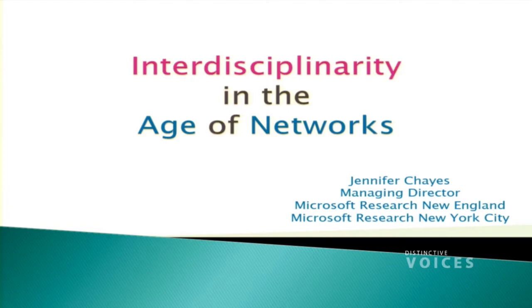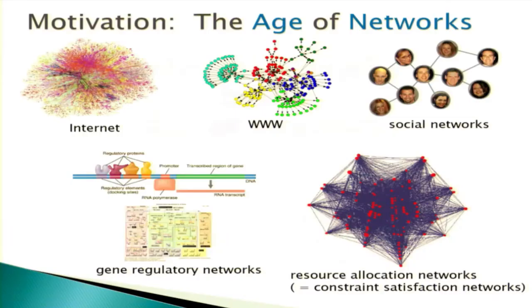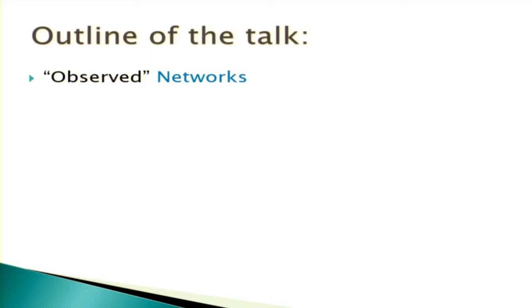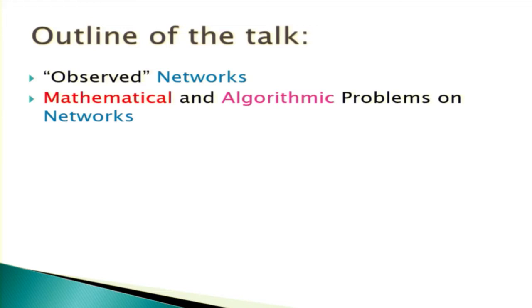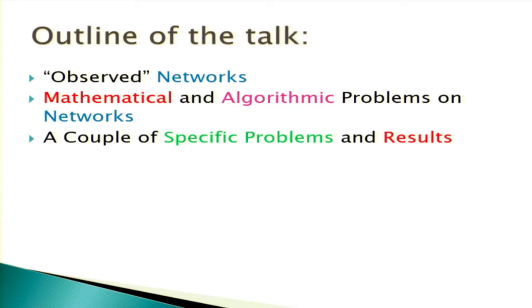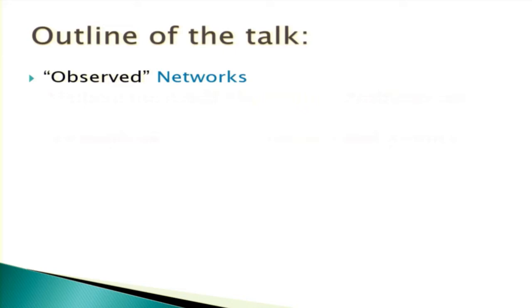Interdisciplinarity is not really a word, but none of you are from English so it doesn't matter. I'm going to be talking about what I call the age of networks. When we look around, we see networks — physical networks like the Internet, the World Wide Web, social networks, biological networks, resource allocation networks. I'll tell you some of the networks I'd like to model, then some of the problems I look at on networks, and then focus on a couple of specific problems.